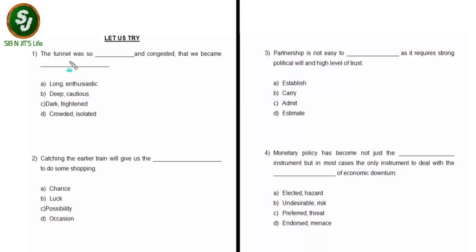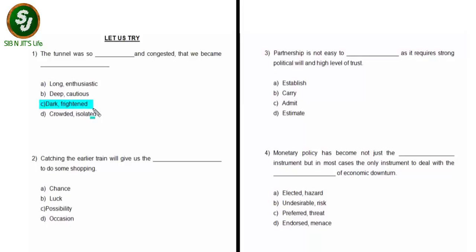Moving on to option B: 'The tunnel was so deep and congested, we became cautious.' The tunnel can be deep and congested and you can become cautious, but let's check further. Option C: 'The tunnel was so dark and congested that we became frightened.' This is suiting in a better way. Option D: 'The tunnel was so crowded and congested that we became isolated.' — No. Out of all four options, C is fitting best. The correct option is C: dark and frightened. The full statement is: 'The tunnel was so dark and congested that we became frightened.'